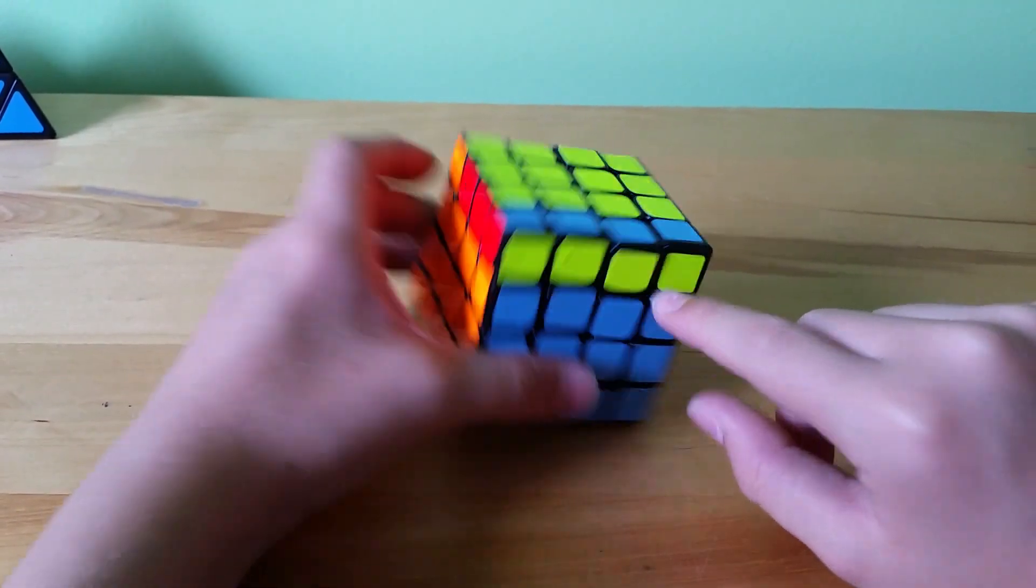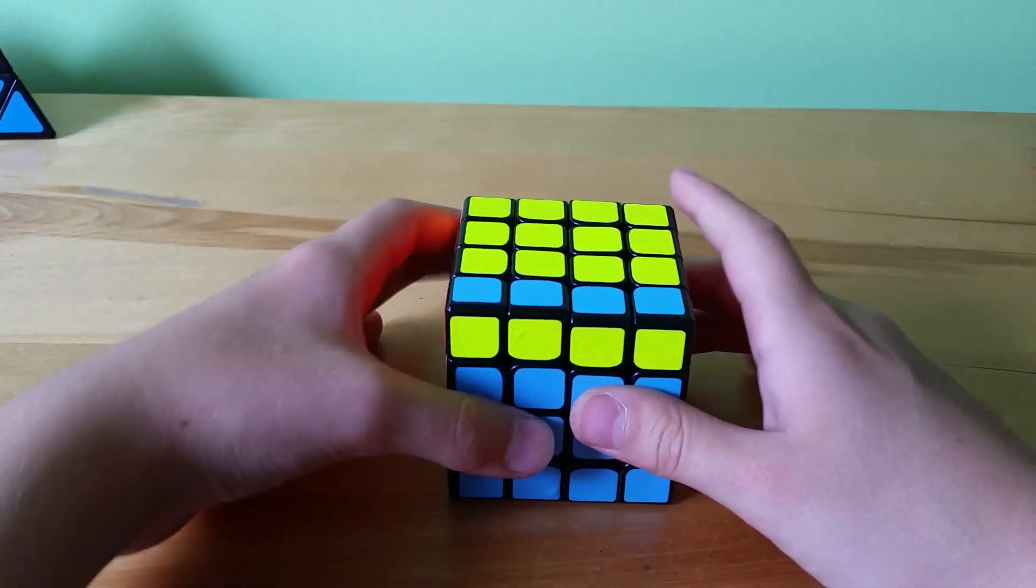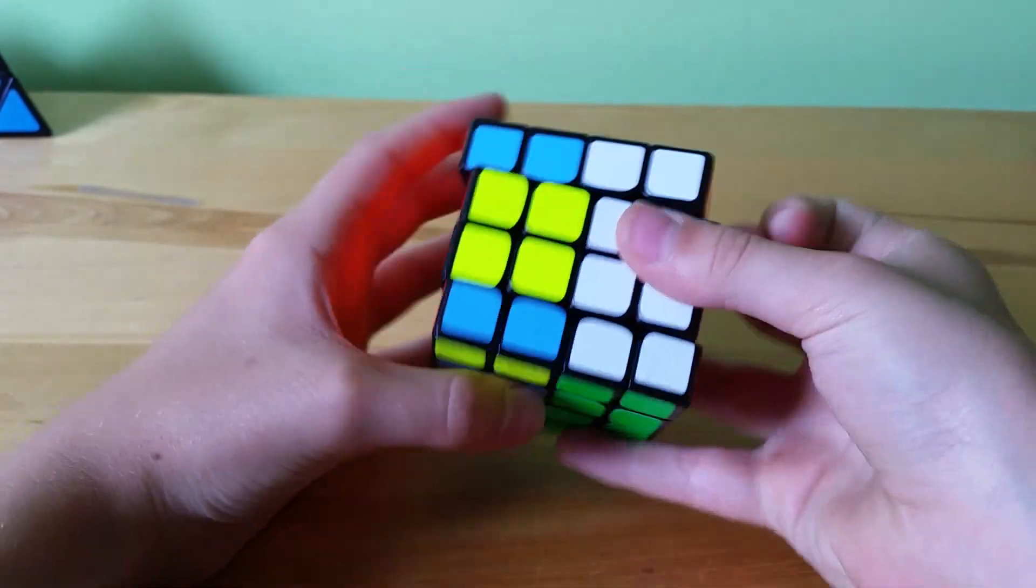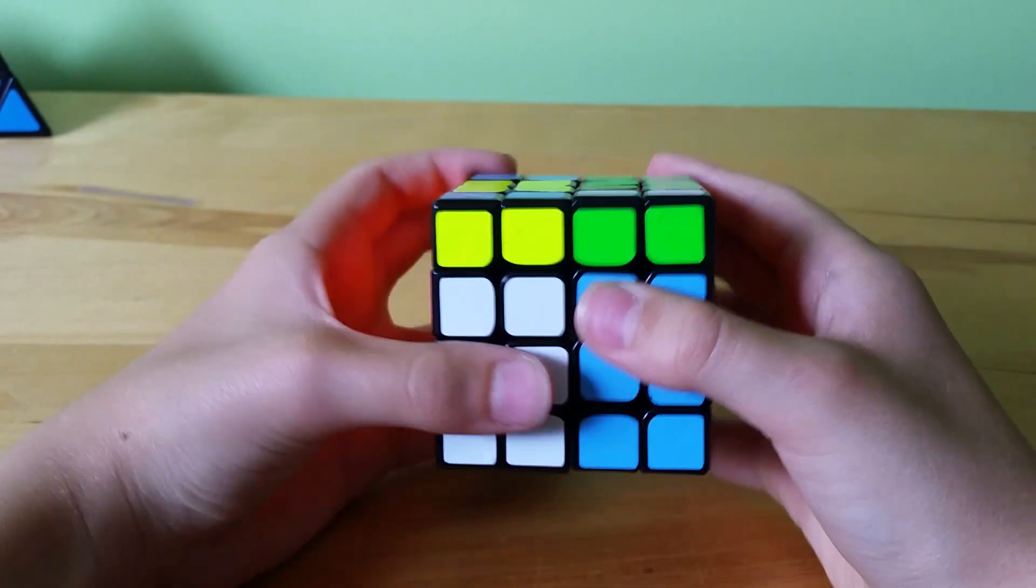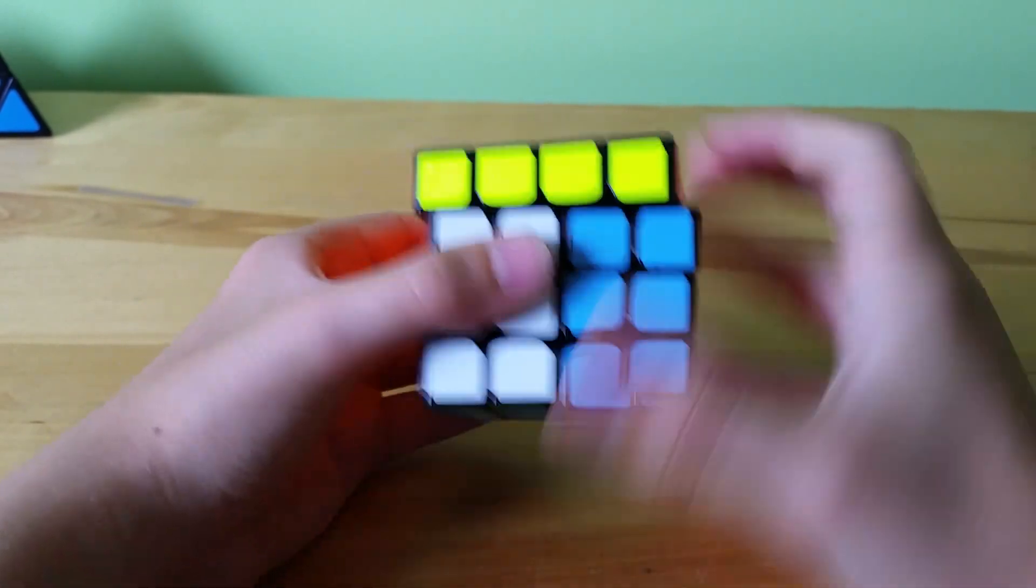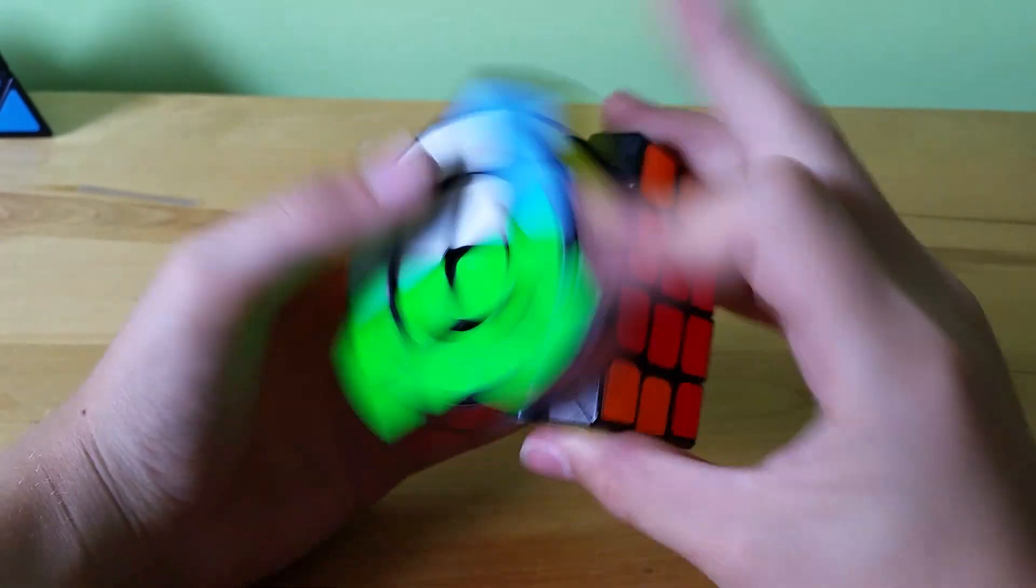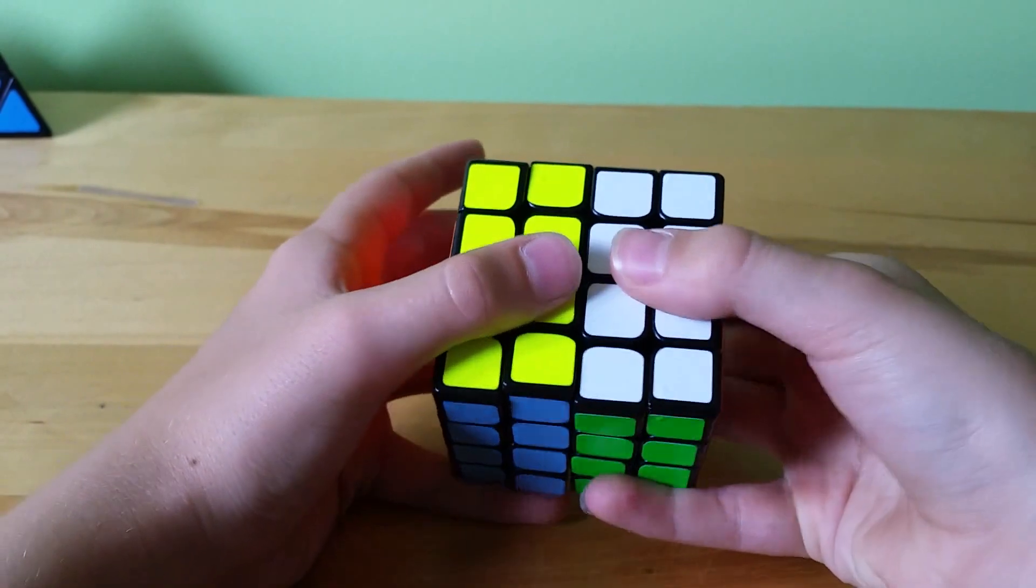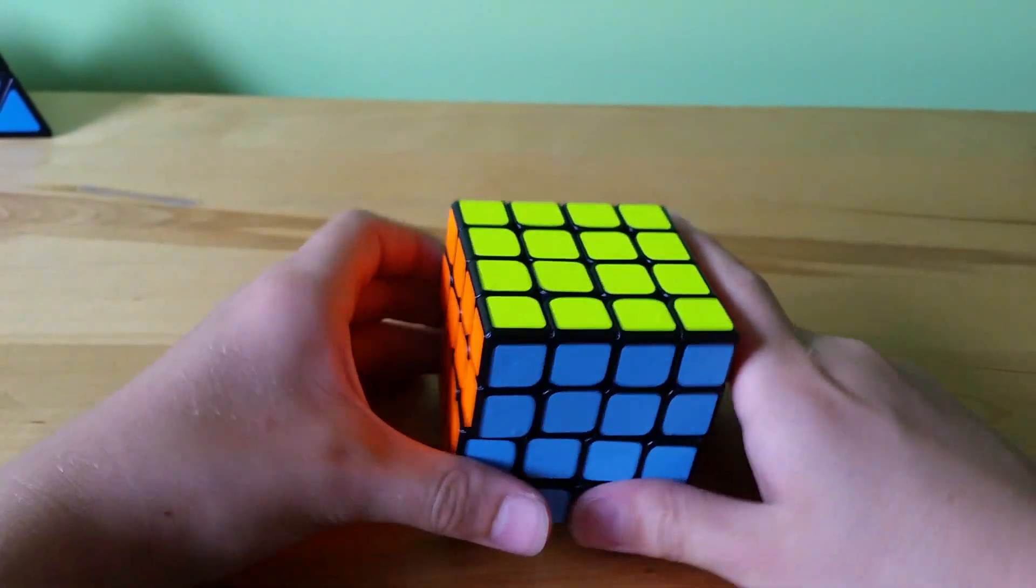It flips this front section and it swaps these two edges here. And it can be executed like this: Rw2, B2, U2, Lw', U2, Rw, U2, F2, Rw, F2, Lw', B2, Rw2.